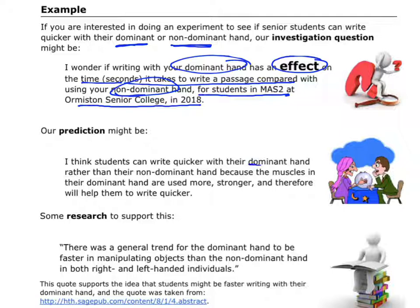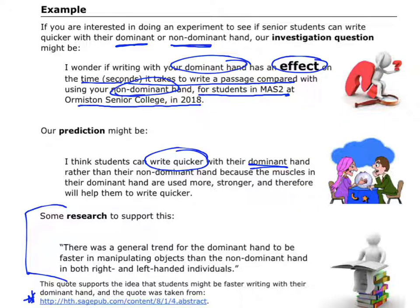I think students who write with their dominant hand are going to be faster — quicker than with their non-dominant hand. The reason is that if my right hand is my dominant hand, I tend to use it to pick things up and write, so the muscles in that hand are a lot stronger and more developed. Because I've got stronger muscles, I think that means I'll be able to write quicker. I've also found some research, with a citation, showing that the dominant hand can be faster at manipulating objects — which connects directly to what I'm trying to show.